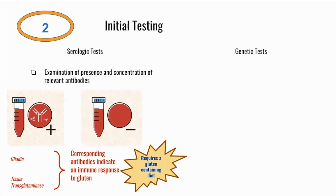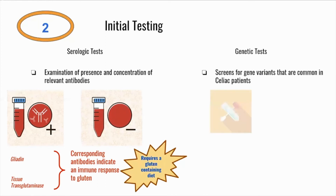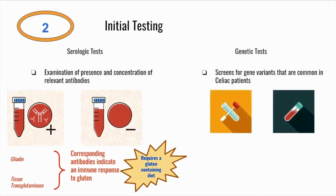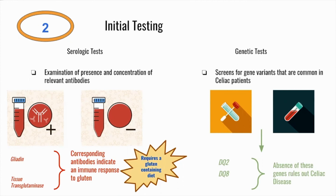Another option is genetic testing. These tests look for the genes that predispose a person to celiac — DNA is collected from a cheek swab or blood sample and analyzed for celiac-related genetic markers. If the DQ2 and DQ8 genes are not present, celiac disease can be ruled out. Like positive serologic tests, the presence of these genetic markers is not enough to definitively diagnose celiac but does merit further testing.